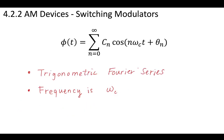Recall the trigonometric Fourier series. You can write it as an infinite summation of some coefficient multiplied by cosine waves, where you have some n·ωc·t — your carrier frequency — and then some phase θn.